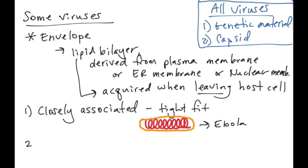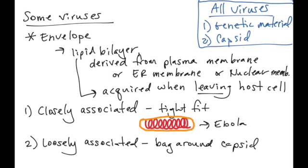The other is that they can be loosely associated. I think of this more like a bag around the viral capsid. An example of this is the herpes viruses, which have icosahedral capsids, but their envelope doesn't always fit so tight. It can be kind of loose on one end, and the virus capsid can kind of move around inside that envelope.